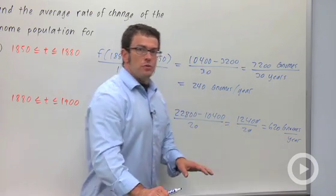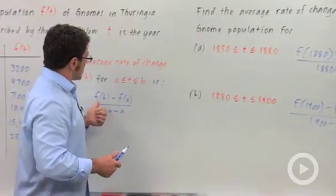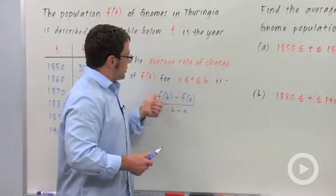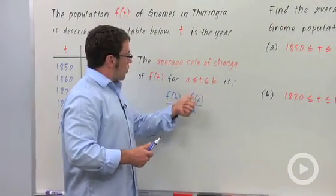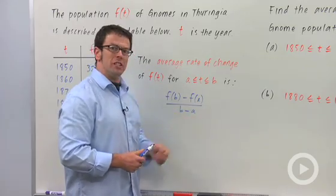Average rate of change is exactly like average velocity: it's the change in the quantity f divided by the change in time.